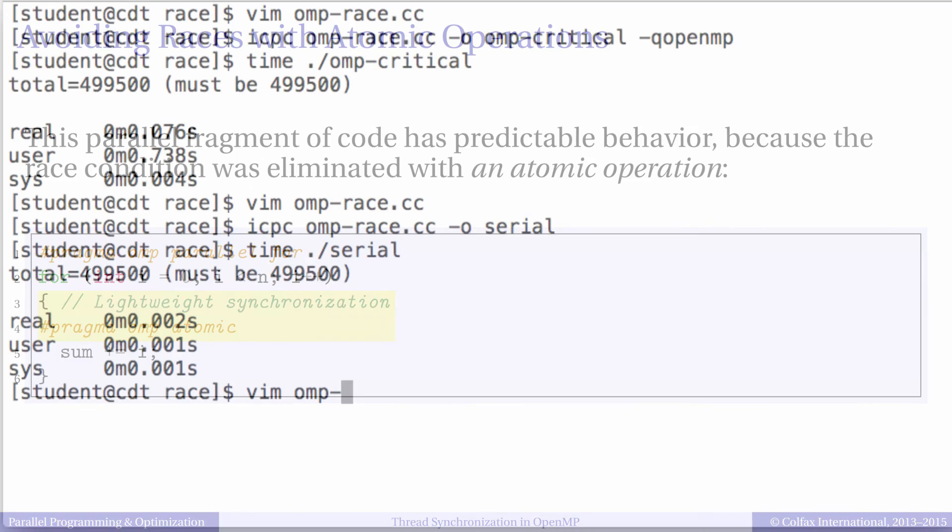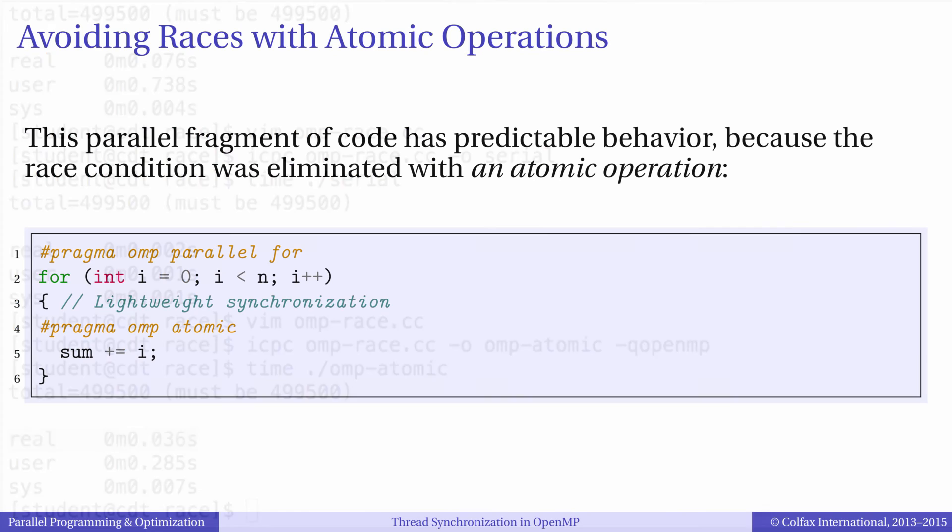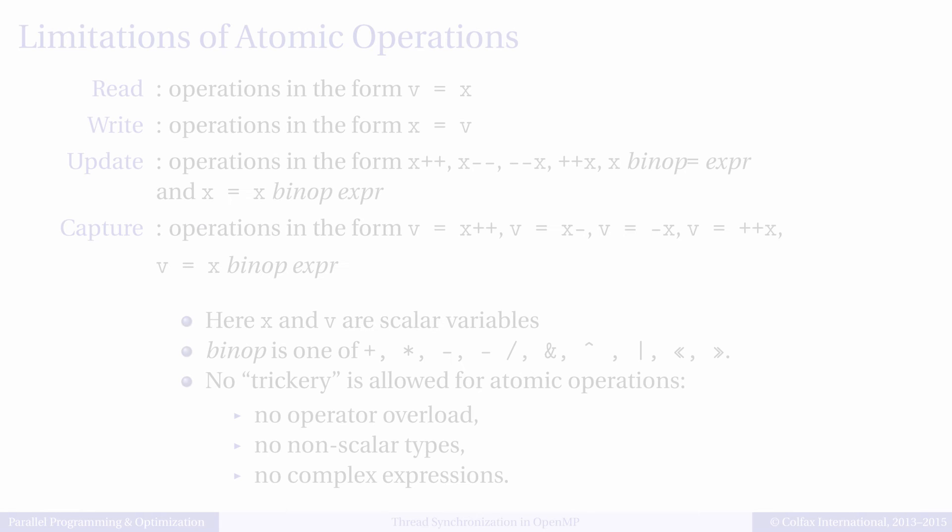We can verify by experiments that atomic operations also lead to poor performance in this specific code. However, they may be justified in other situations, especially when they are used outside the innermost loop.